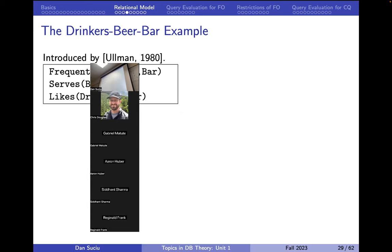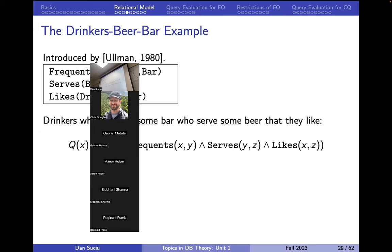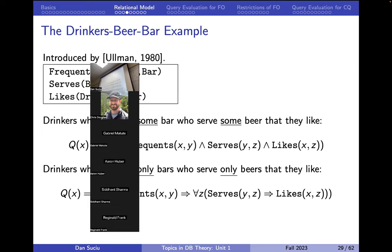Here is a classic example from the first book on database systems — drinkers that frequent bars, bars that serve beers, and drinkers that like beers. Find all the drinkers who frequent some bar that serves some beer that they like. These are easy to write with existential quantifiers, both in first-order logic and in SQL. In first-order logic, you can write them equally well — you can read it directly from the first-order sentence.